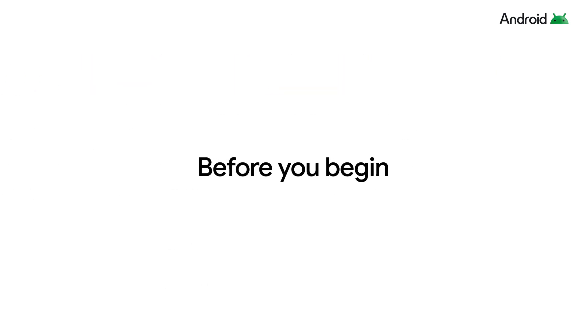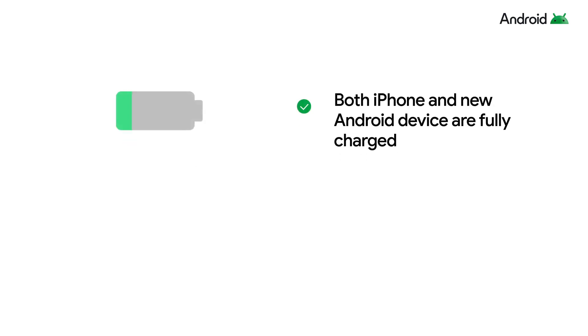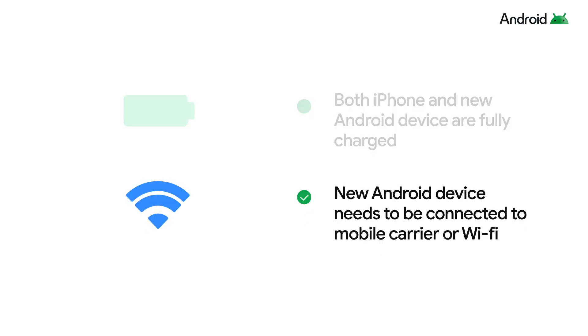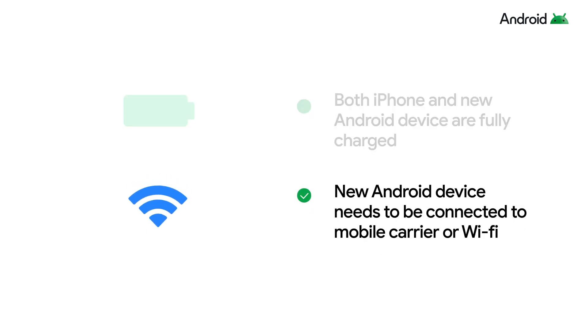Before setting up your device and transferring your data, here are some important things to know. We recommend that both your iPhone and new Android phone are fully charged or connected to power. Make sure both phones can connect to Wi-Fi during the setup process. And don't worry — your data is secure during and after the transfer process with Android's powerful and always-on protection. Let's get started.